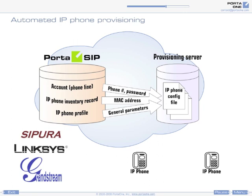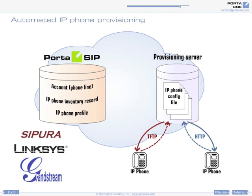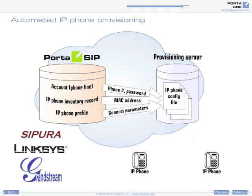The moment it connects to the internet, the IP phone fetches the configuration file from the provisioning server and starts using the service. This file will be regenerated if any changes have been made to the subscriber's service configuration, so that changes — for example in phone number or feature activation — are automatically propagated to the IP phone.